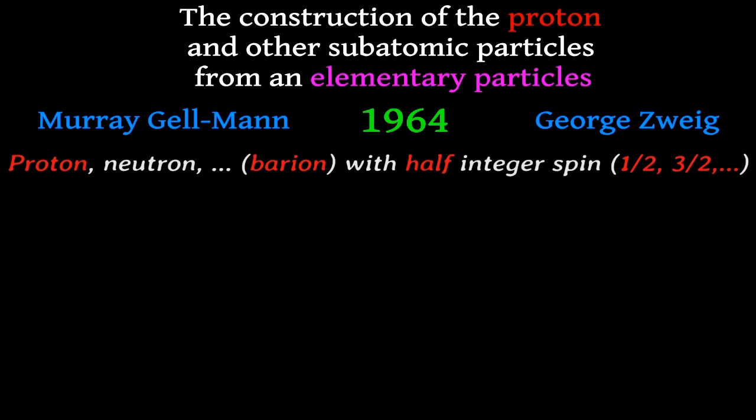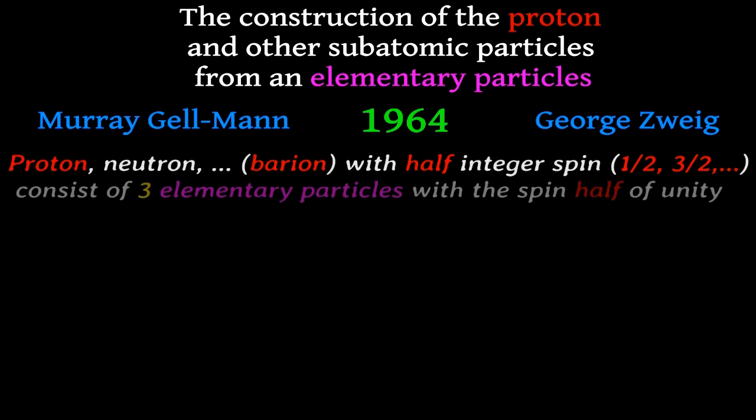According to their idea, the proton, neutron, and other similar particles with half-integer spin, called baryons, consist of three elementary particles.